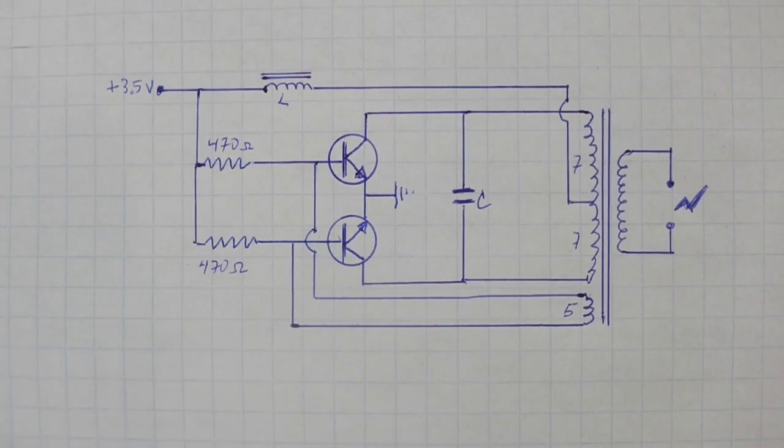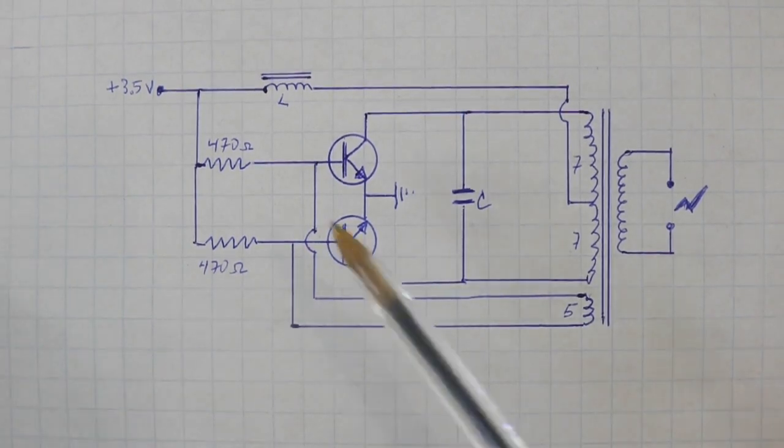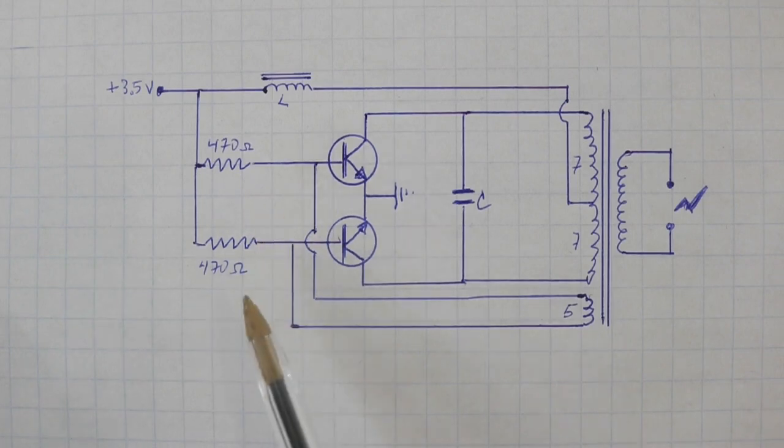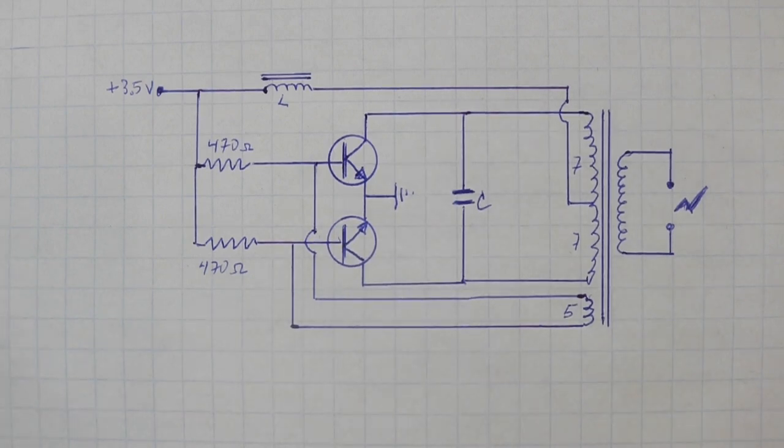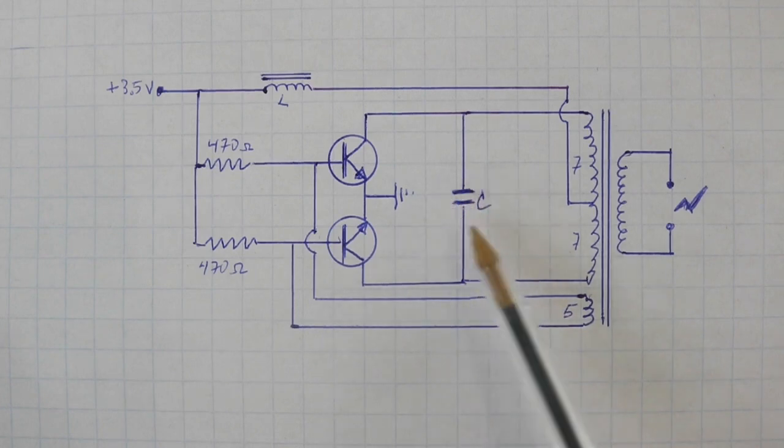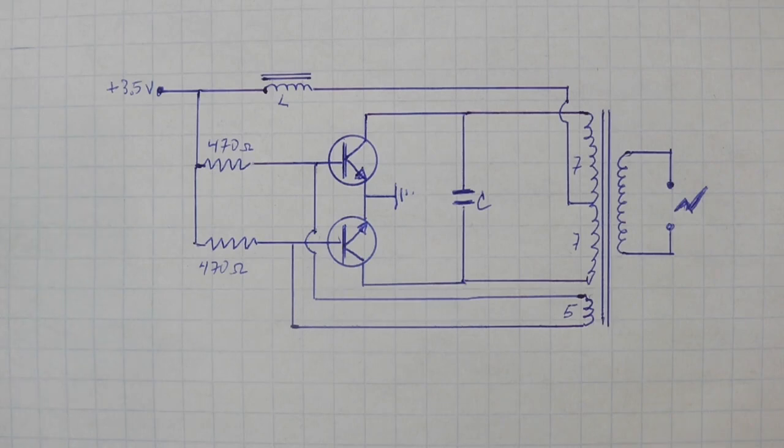This is the schematic. As you can see we need the two transistors, also two resistors, 470 ohms. This must be at least one watt of power. We need this capacitor. This must be a good quality capacitor, polyester and with a rated voltage of at least 200 volts.